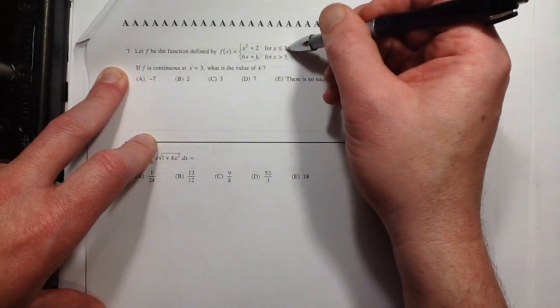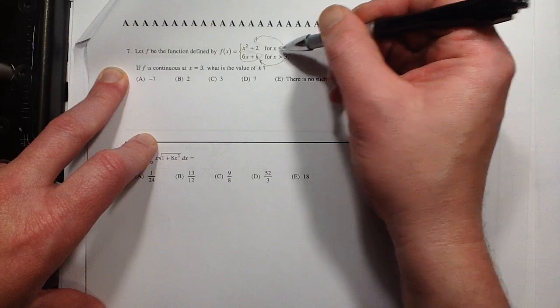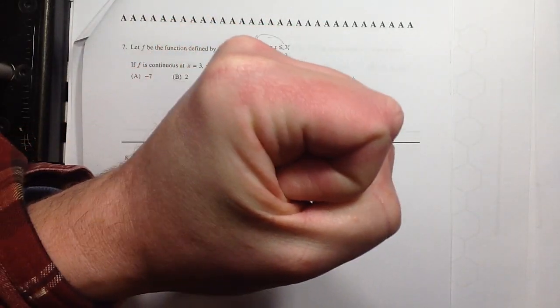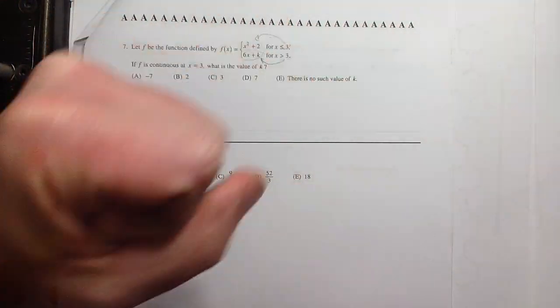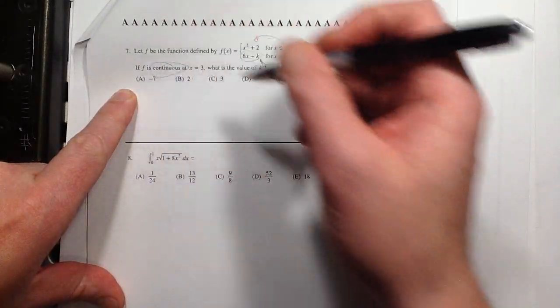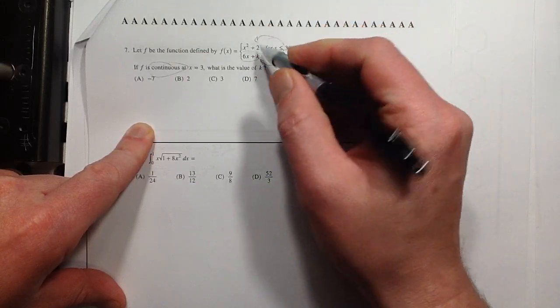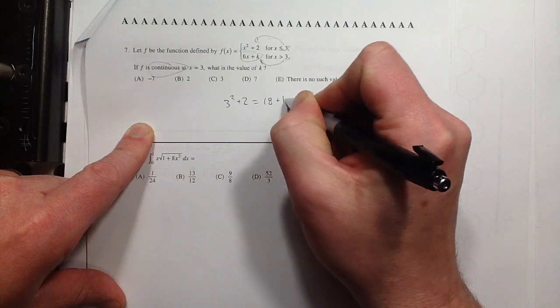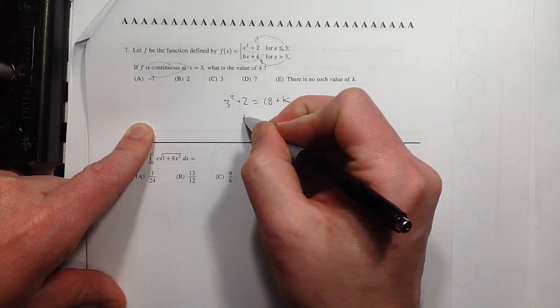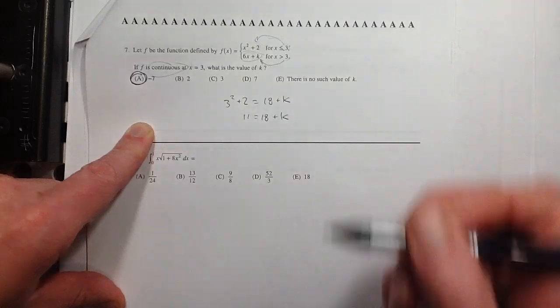Well, if it's going to be continuous, then at that place where it switches over, you have to get the same thing. They have to join up. This is the equals part, so there's a closed point here, and this is the open part with an open circle. If they join up and it's continuous, then these two things have to be equal when you plug in 3. So I plug in 3 to this, plug in 3 to this, and we get 3 squared. That's 11 equals 18 plus k. So k would have to be equal to negative 7 to make that true.